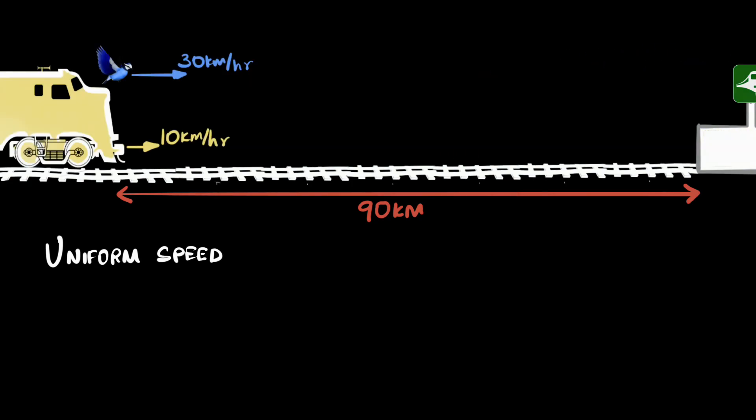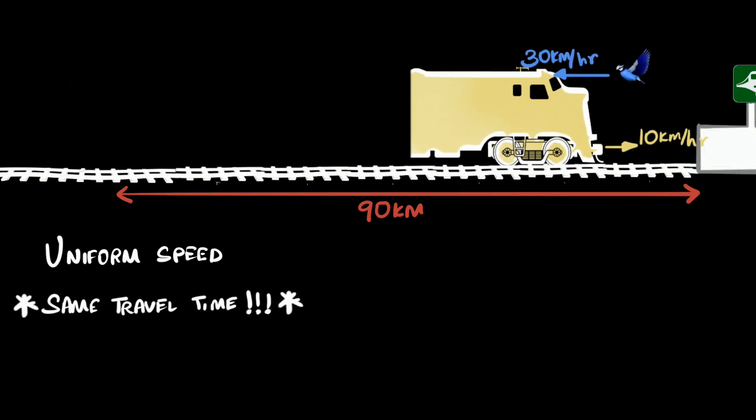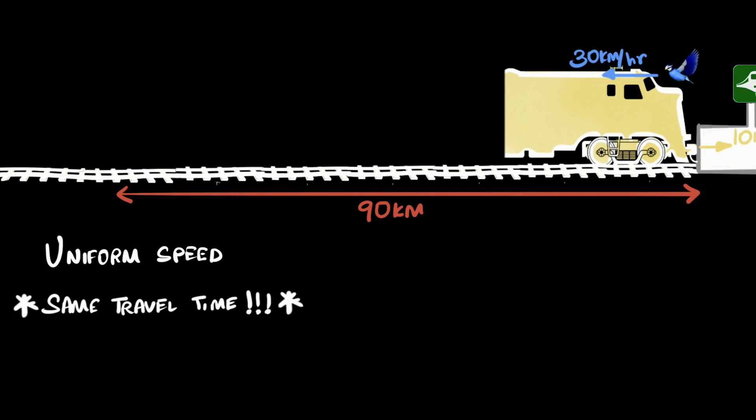The second thing, and I think this is the key feature that gets missed out when we directly jump into solving the problem. The second key feature is that both the train and the bird have the same travel time. They have equal travel time. They both start together, and then their journey ends together when the train reaches the station. So they have both traveled for exactly the same time.